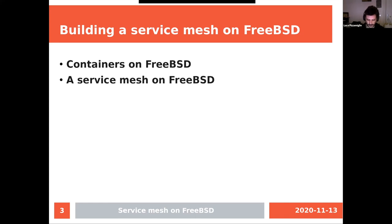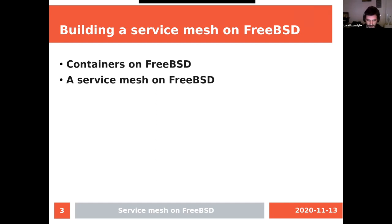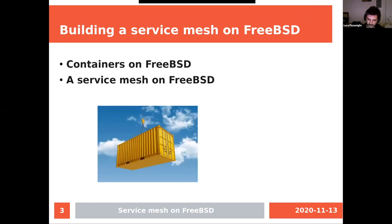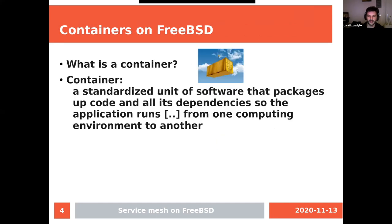This talk is about containers on FreeBSD and service mesh. Usually on Linux you have Docker and Kubernetes, and the usual question is: can we have Docker on FreeBSD, and ultimately can you have something like Kubernetes on FreeBSD? I will not speak about Docker on FreeBSD, but rather a kind of parallel path that we implemented over the last two years.